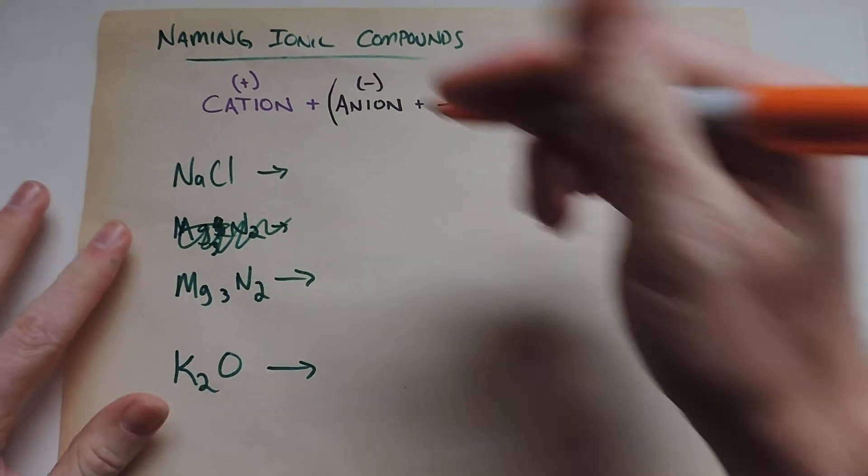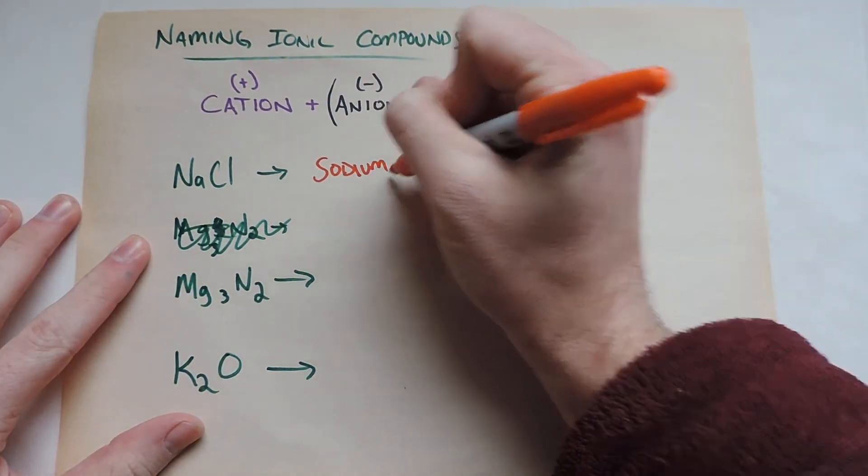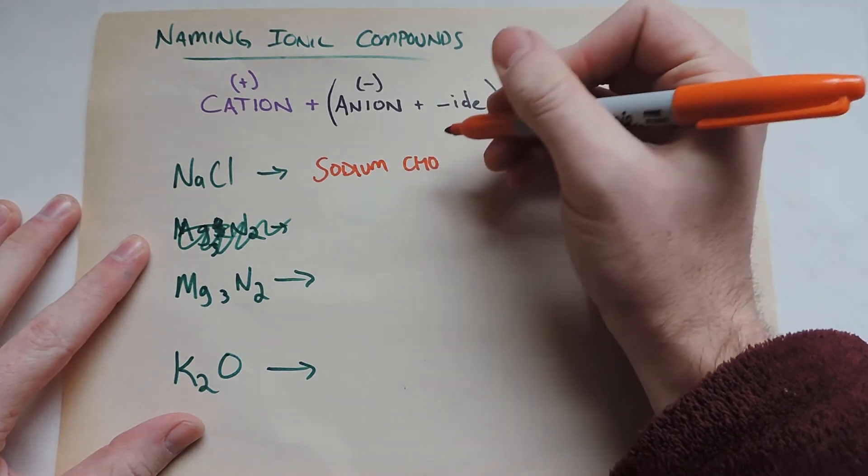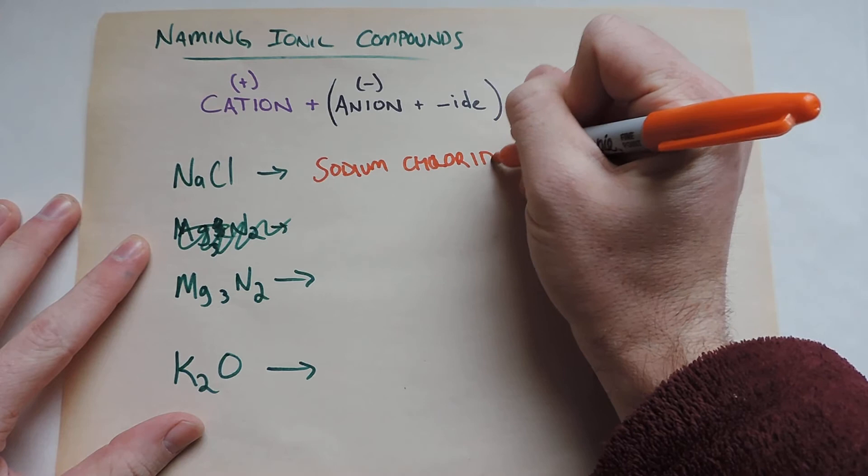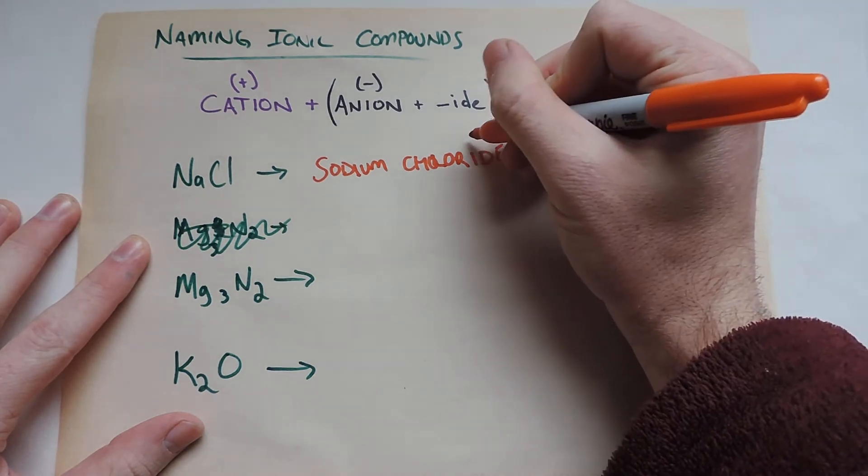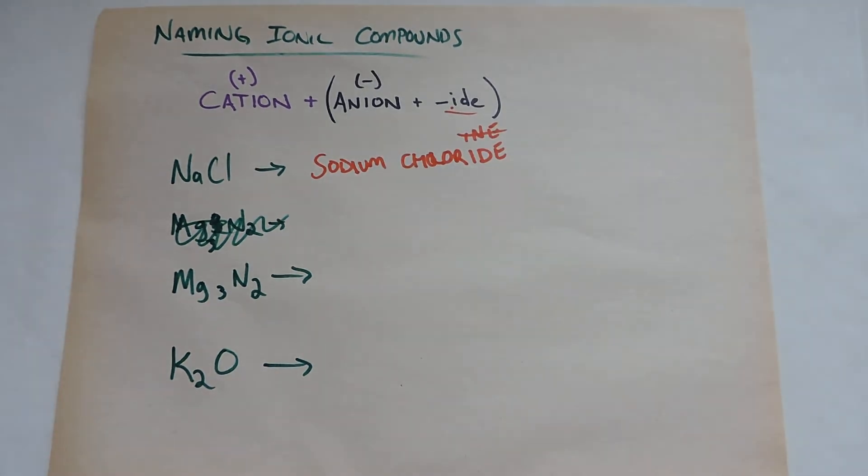Okay, so I'm not going to use the periodic table because it's kind of clunky. So we're going to do sodium chloride. So instead of having chlorine, we just put in the ending -ide. So it's super easy.